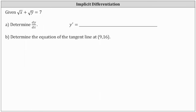We are given the square root of x plus the square root of y equals seven. We were asked to determine dy/dx, or y prime, and then also determine the equation of the tangent line at the point nine comma 16. Because we have an implicit equation, we will perform implicit differentiation.